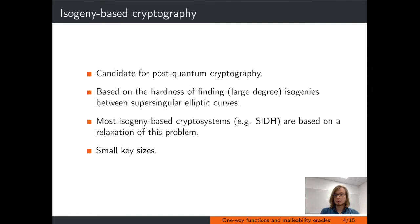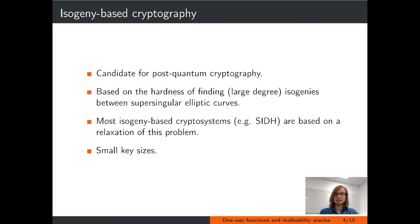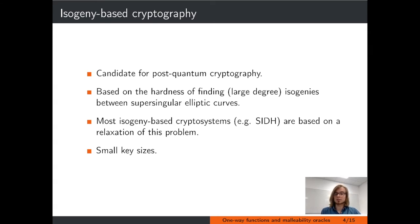Isogeny-based cryptography is one of the candidates for post-quantum cryptography. The core problem of the area is to find large-degree isogenies between supersingular elliptic curves. In the isogeny graph, this can be interpreted as a pathfinding problem, where you're given two vertices and have to find a path connecting them. Most isogeny-based cryptosystems, most famously SIDH, are based on variants or relaxations of this problem. One advantage of isogeny-based cryptography is that the key sizes are much smaller compared to other post-quantum candidates.